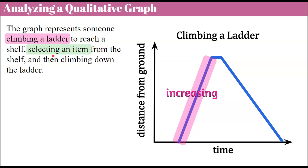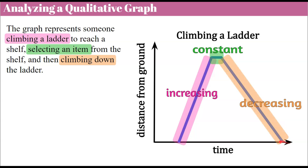The second thing that happens is whoever's climbing the ladder selects the item from the shelf. That's represented in the horizontal or constant part of our graph — this is where they've paused, and their distance from the ground is not changing, but time is elapsing as they make their selection. Then the third thing that happens is they're climbing down the ladder, so the distance from the ground goes from high back down to the ground. This is a qualitative graph because there are no numbers, so we don't know how much time has elapsed or how far they went up.